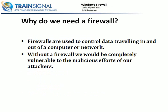So first of all, why do we need a firewall? Firewalls are used to control data traveling in and out of a computer or network. Most typically you think of a firewall as something that protects a network, but in this case Windows Firewall is something that protects the individual computer. Without firewalls, we would be completely vulnerable to malicious attackers who could simply communicate with our network, sending malicious data such as viruses, worms, Trojan horses — and there would be no firewall to filter what is and isn't allowed.